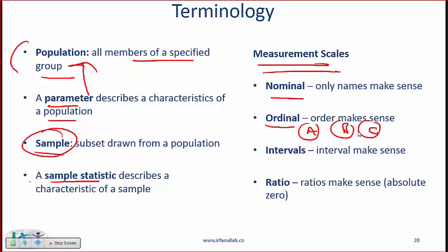Ordinal means order makes sense, so if you have A, B and C you can say A is better than B which is better than C. But the degree by which A is better than B doesn't really matter.